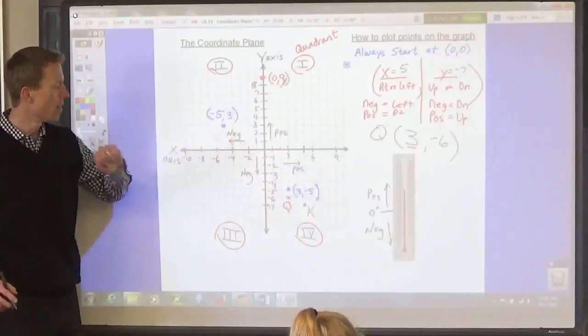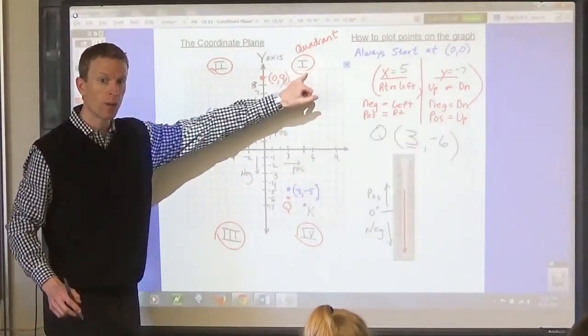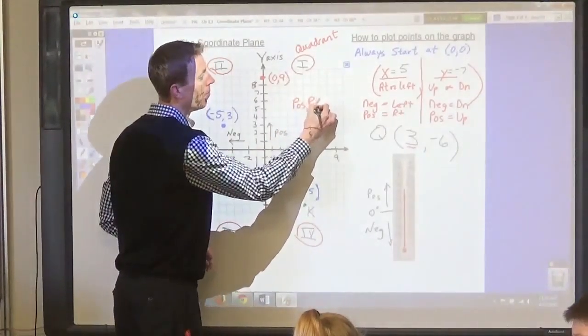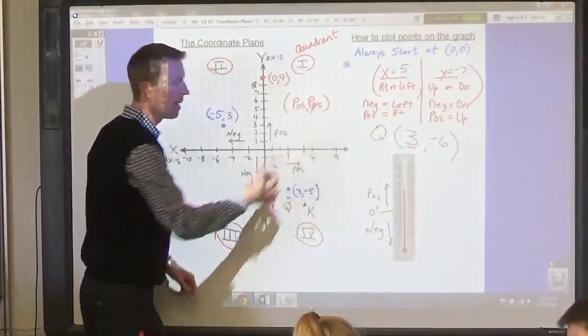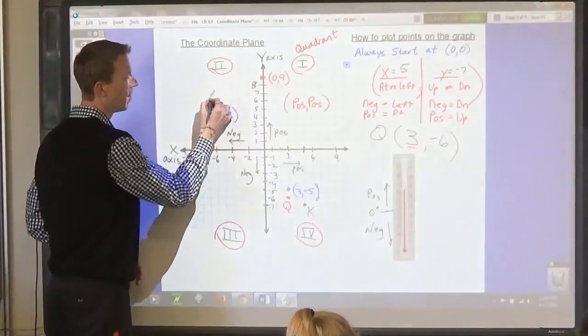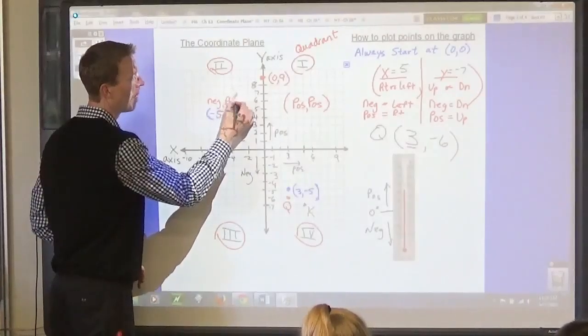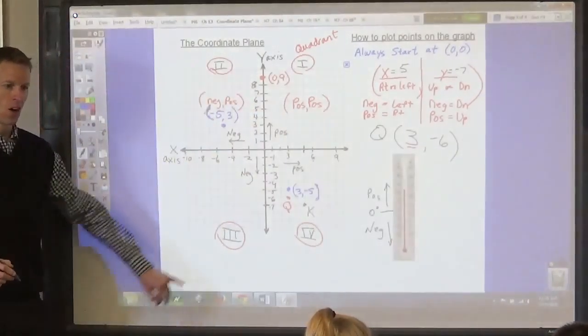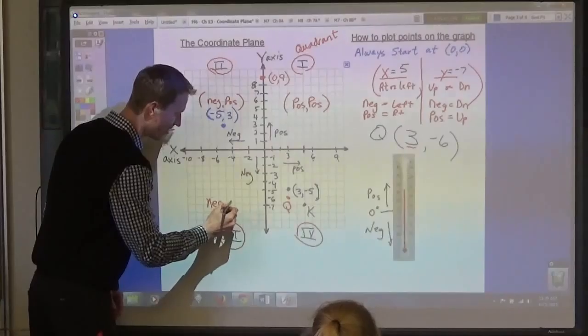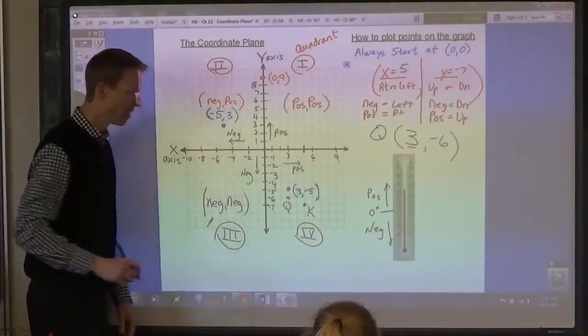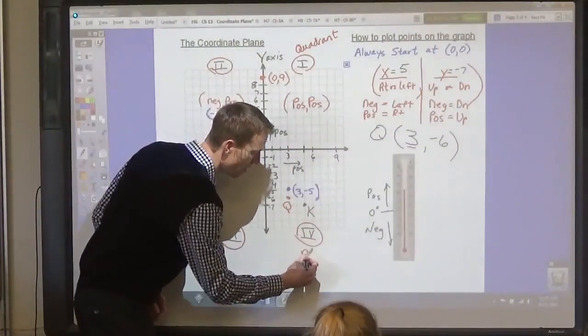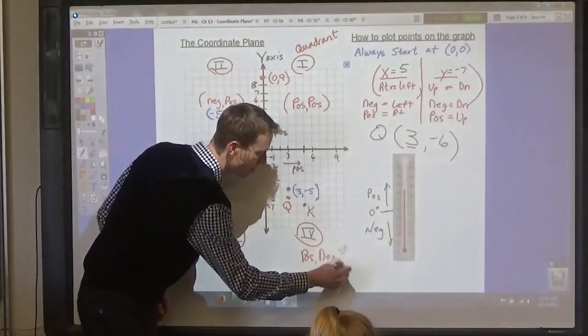How about this point? Notice that all the points in quadrant 1 are positive, positive. Because we go right and up. All the points in quadrant 2 would be negative, positive. All the points in quadrant 3 would be negative, negative. And all the points in quadrant 4 would be positive, negative.